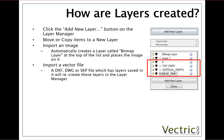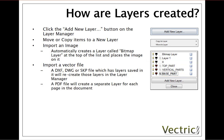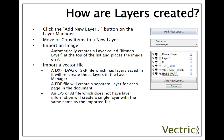When we import a vector file — for instance a DWG, DXF or SKP file which has layers within that file — then those layers will be recreated upon import into the software. And for those importing a PDF, a separate layer will be created for each page within the PDF document. An EPS or AI file which does not have layer information will essentially have a single layer created with the same name as the imported file.